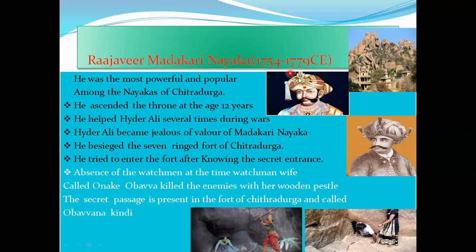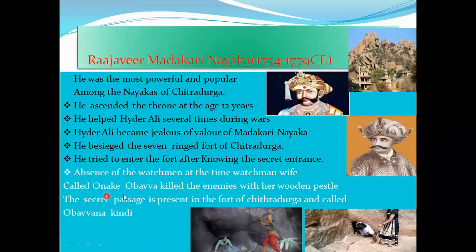Rajavira Madakari Nayaka ascended the throne at the age of 12 years. He helped Hyder Ali several times during wars, but Hyder Ali became jealous of him and wanted to attack the seven-ring fort of Chitradurga. His attacks were not successful twice. Later, after knowing the secret entrance, he attacked Chitradurga. In the absence of the watchman, his wife Onake Obava killed the enemies with her wooden pestle.